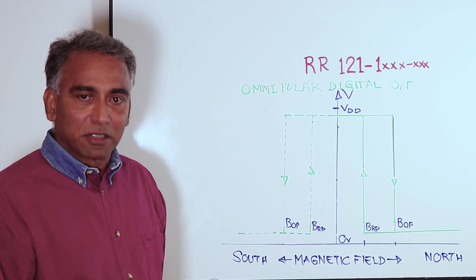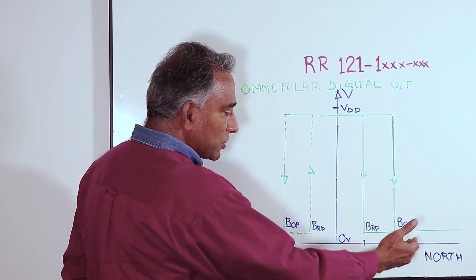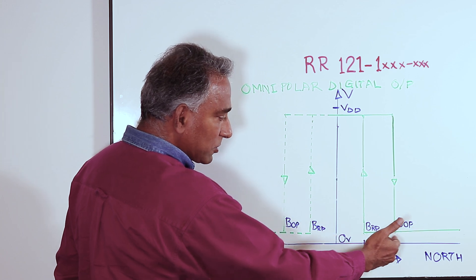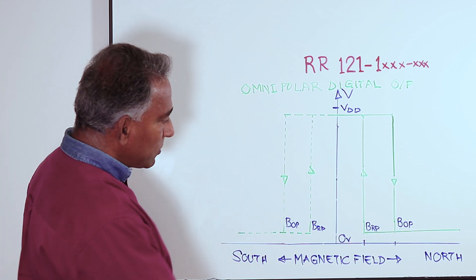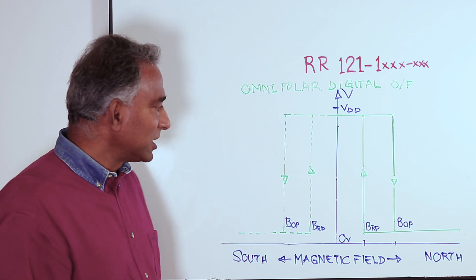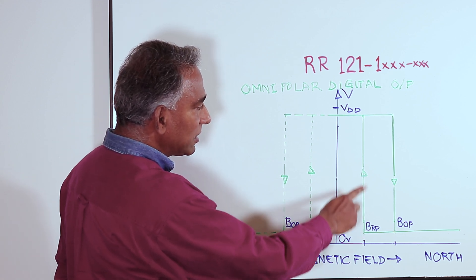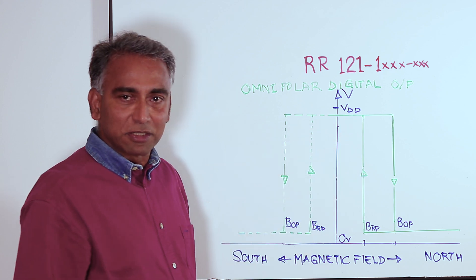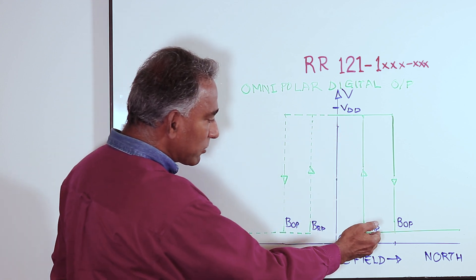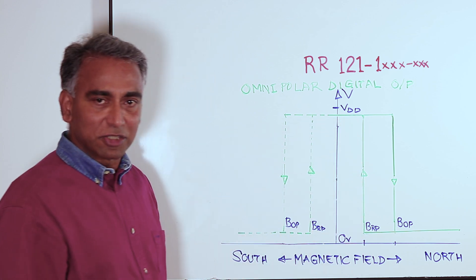What happens when the magnet starts moving away? When the north pole of the magnet starts moving away, the field strength from the north pole starts decreasing. We see at a point BRP, or the release point for the sensor, the output switches from a digital low state back to a digital high state. We say at the release point, the sensor has switched from on back to off condition.